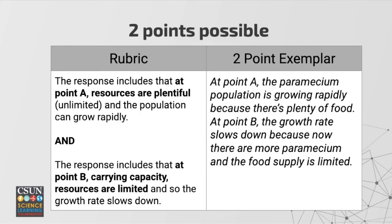Let's take a look at the rubrics. The rubric requires information about point A — that resources are plentiful so the population can grow — and about point B — that resources are limited and something about carrying capacity so the growth rate is slower. An example full-credit response: at point A the paramecium population is growing rapidly because there's plenty of food; at point B the growth rate slows down because the food supply is limited. You need both of those ideas to get two points.